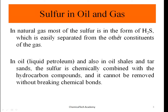In natural gas, most of the sulfur is in the form of H₂S, which is easily separated from the other constituents of the gas. By using separation methods we can remove H₂S from natural gas, making desulfurization relatively easy. On the other hand, when dealing with oil, liquid petroleum, oil shales, and tar sands, the sulfur is chemically bound with the hydrocarbon compounds and cannot be removed by simple separation.